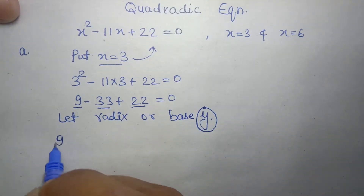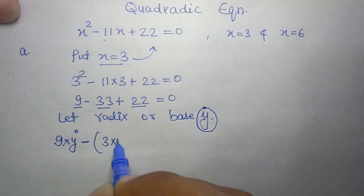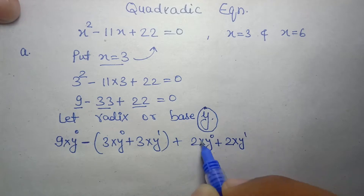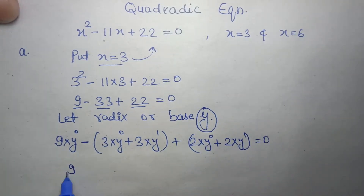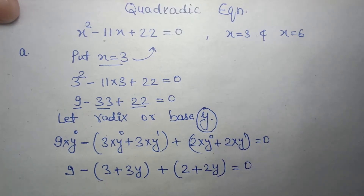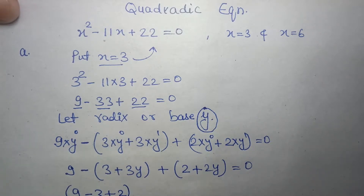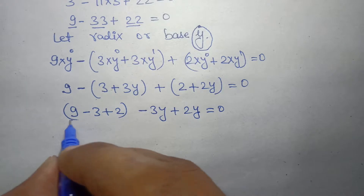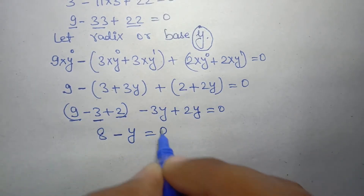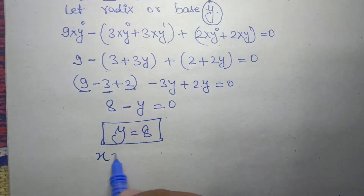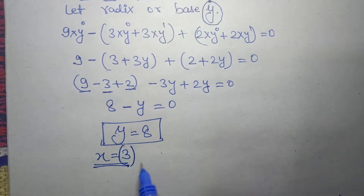Expanding: 9 into y to the power 0, minus (1 into y to the power 0 plus 1 into y to the power 1), plus (2 into y to the power 0 plus 2 into y to the power 1), all equals 0. This gives 9 minus 1 minus y plus 2 plus 2y equals 0, so 8 plus y minus y equals 0 — wait, collecting constants: 9 minus 3 plus 2 equals 8, and terms in y: minus y equals 0, giving y equals 8. So the root x equals 3 has base 8.